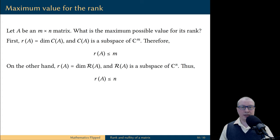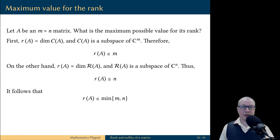Let's summarize. The rank of the matrix does not exceed the number of rows, and the rank of A does not exceed the number of columns. So what is the maximum possible value for the rank? Well, the maximum possible value for the rank is the minimum between the two dimensions of the matrix —